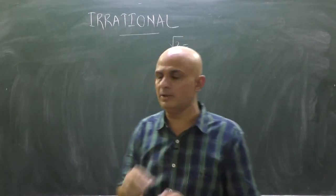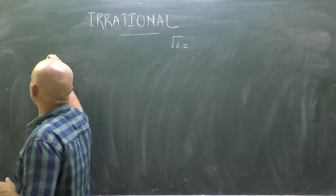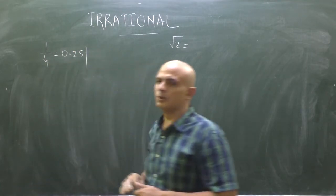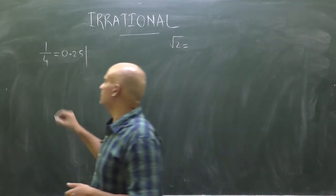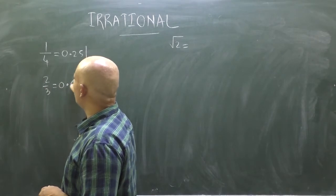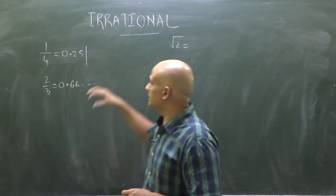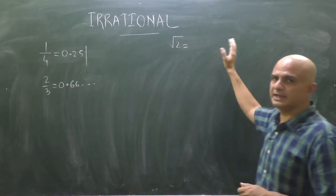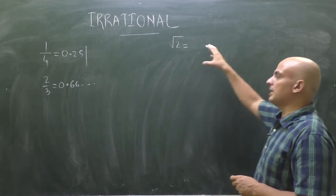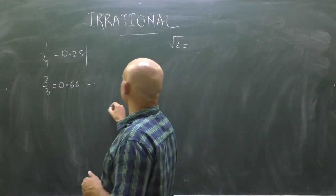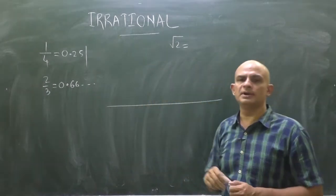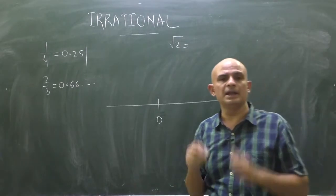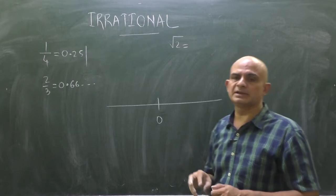As far as rational numbers are concerned, for example 1 by 4 — I know its value, it is 0.25 and it will not go longer than this. And if I write 2 by 3, its value is 0.66 and so on — this is repeating, this is terminating. But the value of root 2 is non-terminating non-repeating, so I cannot write its exact value.